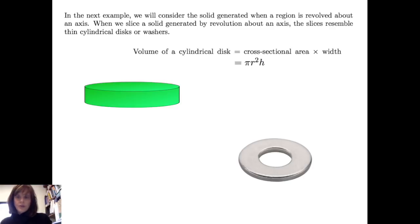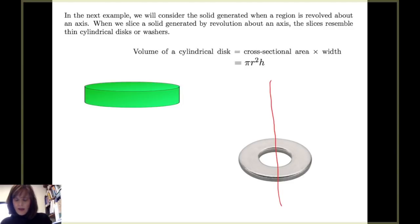Let's consider how a washer results when we take cross-sections of a solid. Suppose again I have an axis of revolution, but this time I have a rectangle where none of the edges of the rectangle are bordered by the axis of revolution. As I rotate this rectangular region about this axis of revolution, this edge that's closest to the axis of revolution will sweep out a hole. This outer edge will sweep out another circle, and we get something that looks like a washer.